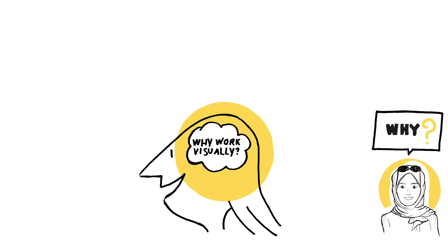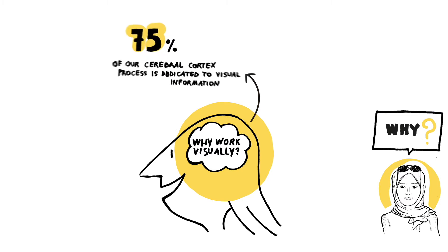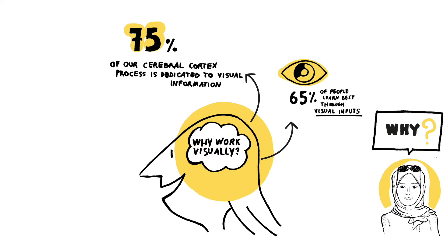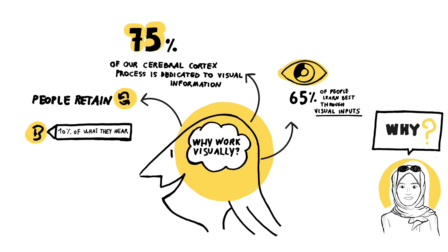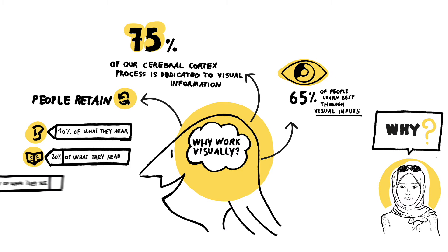Why visual thinking? Because our brain works visually. Did you know that 75% of our cerebral cortex processes are dedicated to visual information? Also, more than 65% of people learn through visual inputs. People retain 10% of what they hear, 20% of what they read, and 80% of what they see.